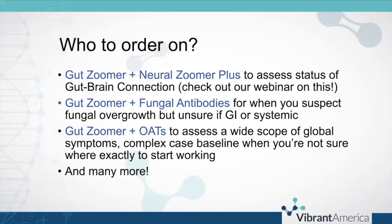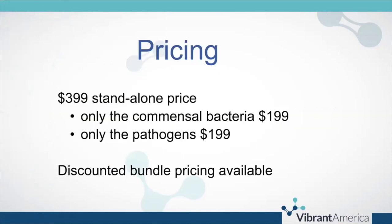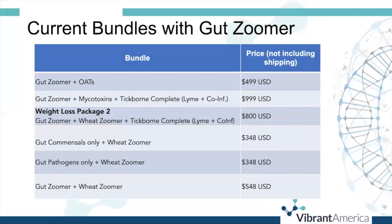There are a lot more tests you can run with the GutZoomer — we have a full menu and it's essentially a one-stop shop. Pricing: the test as a standalone is $3.99. If you want to order only the commensal bacteria or only the pathogens panel, those are each $1.99. We also have additional discounted bundle pricing. The GutZoomer and organic acids test bundle is a fabulous deal — you're basically getting the organic acids test for $100.